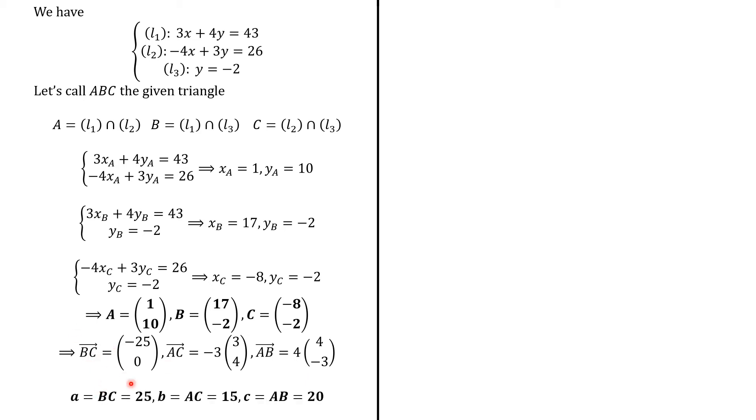So, a, which is BC, is going to be 25. And b is going to be 3 multiplied by 5, which is 15. And c is going to be 4 times 5, which is 20.